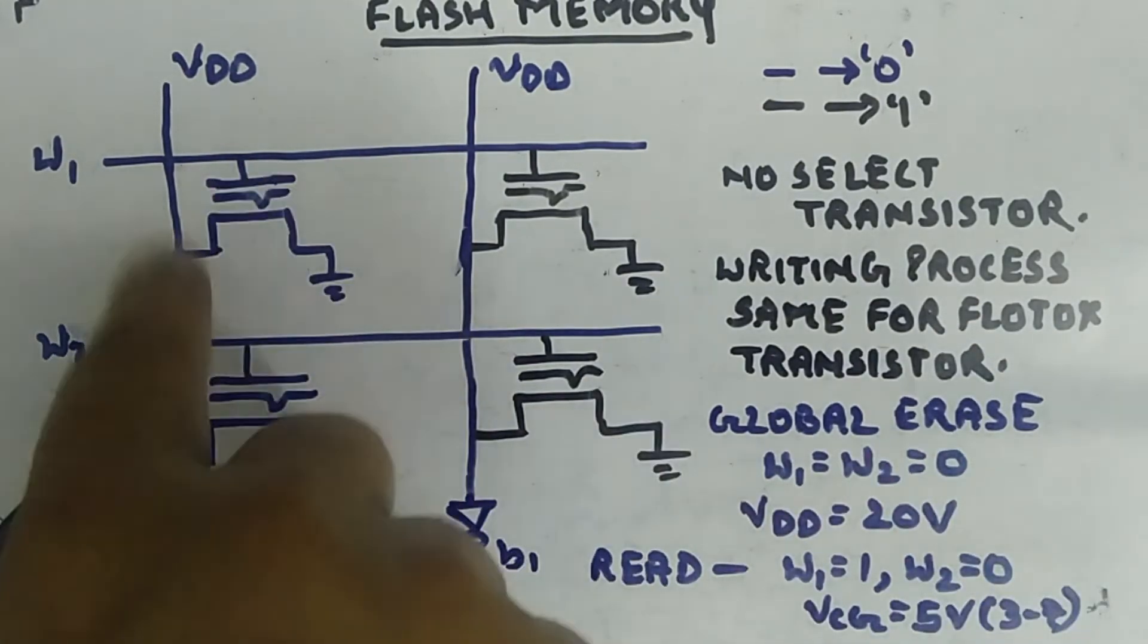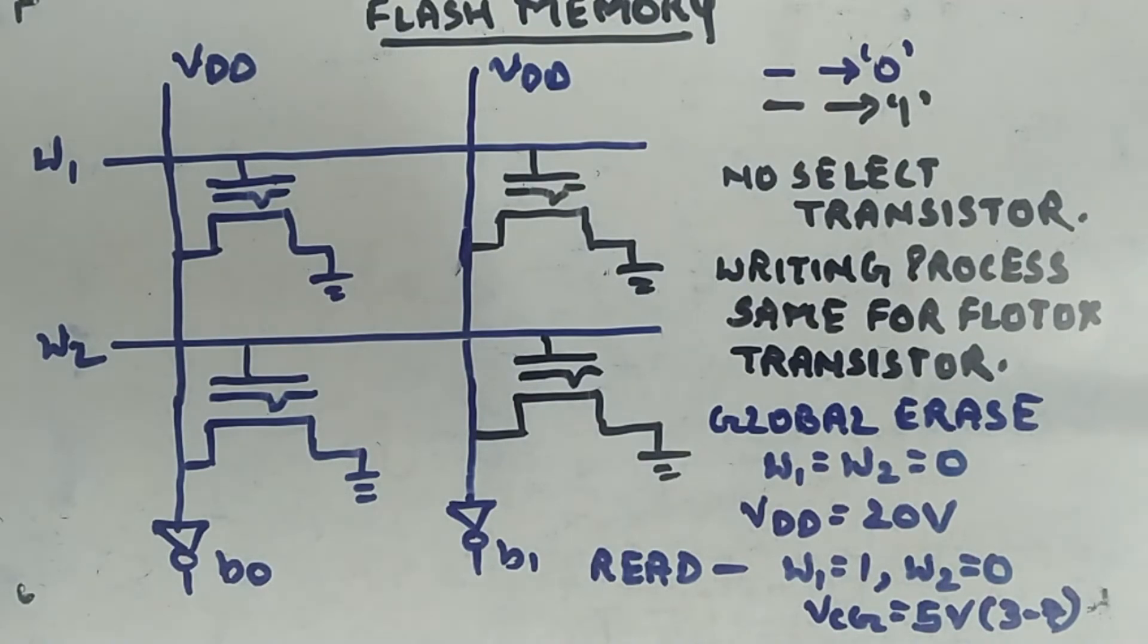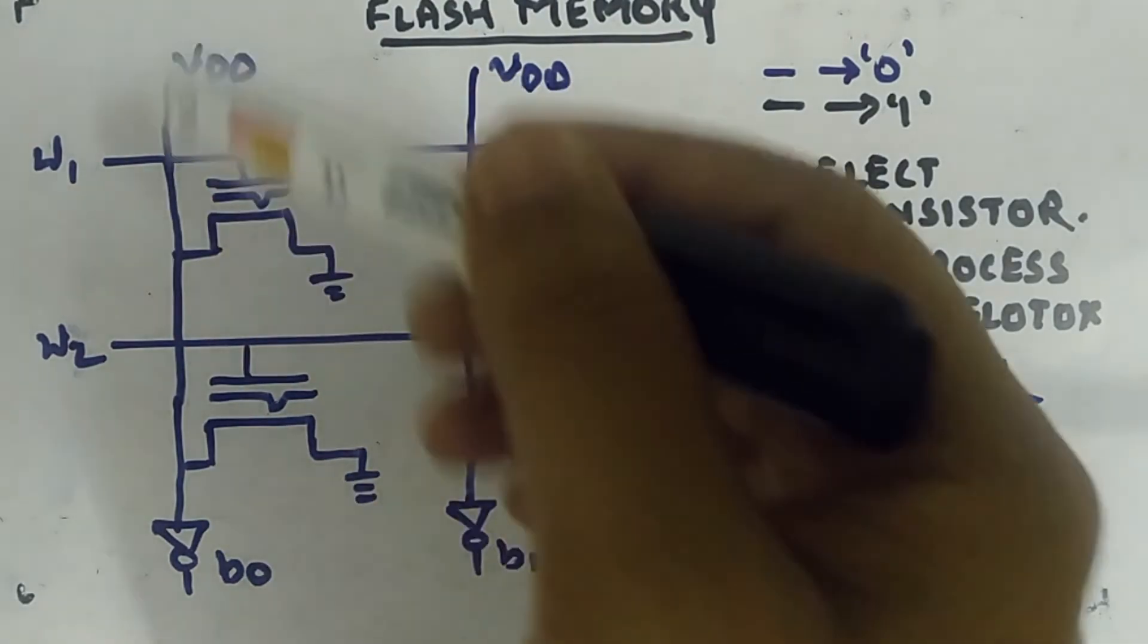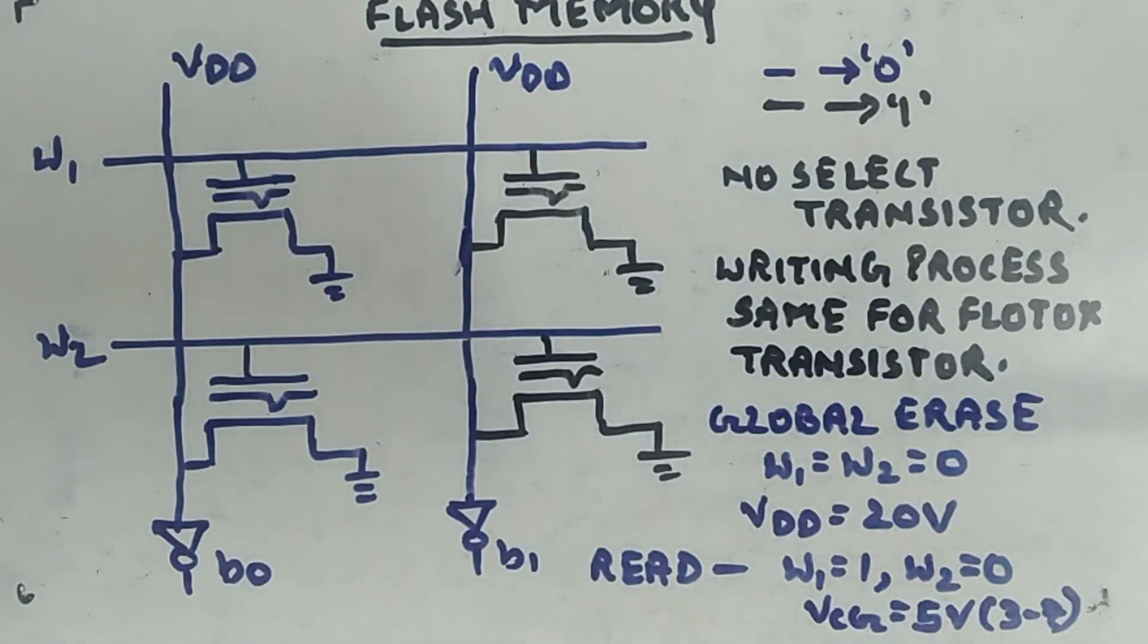You are not able to specifically target a single bit. You are able to erase globally, meaning the whole column you can erase. There are a lot more details in flash memory.